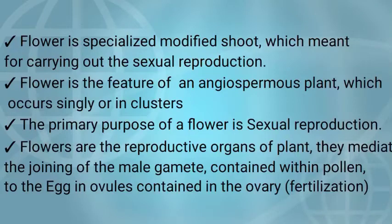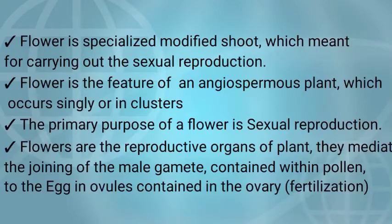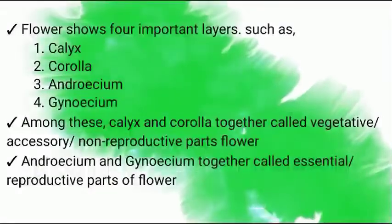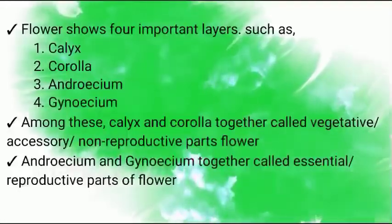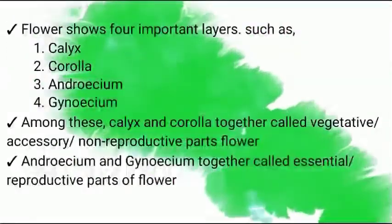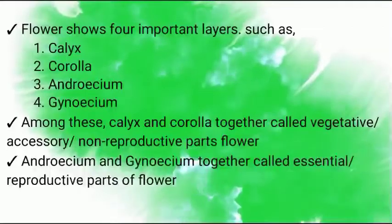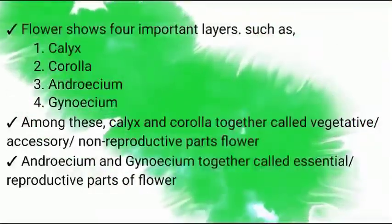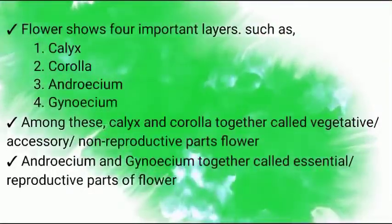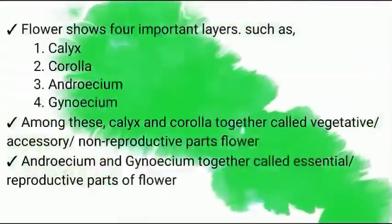Flowers are the reproductive organs of plants. They mediate the joining of the male gamete, which is present in pollen, to the egg, which is present in ovules, which are contained in the ovary. This is also called fertilization. Flowers are generally composed of four important layers: Number 1, Calyx; Number 2, Corolla;